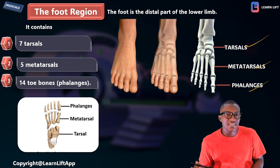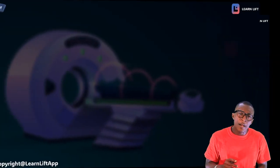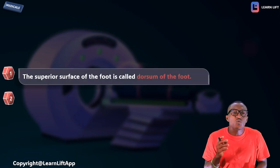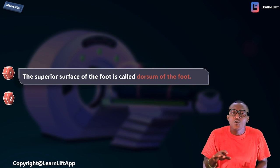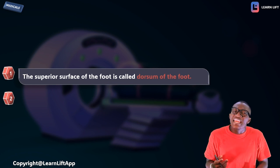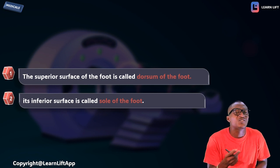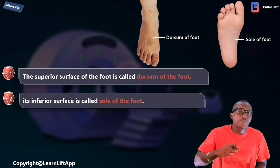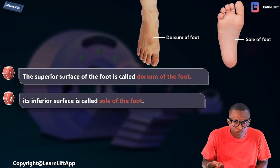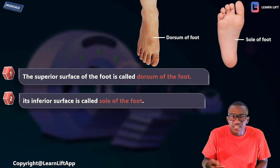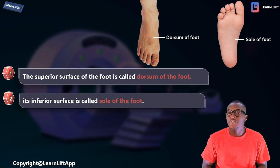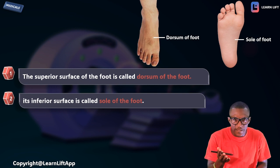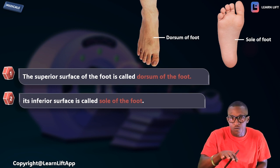You can also see the phalanges, the metatarsals, and the tarsal bones. In the foot, the superior surface is called the dorsum of the foot, while the inferior surface is called the sole of the foot — just as we have the palm and dorsum of the hand in the upper limb.